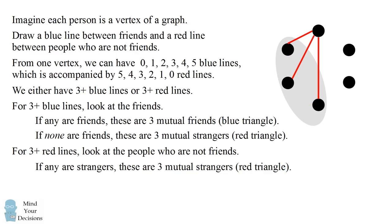The other case is that all of these people are friends with each other. In that case, we'll have to connect these three vertices with blue lines, which means these are three people who are mutual friends.